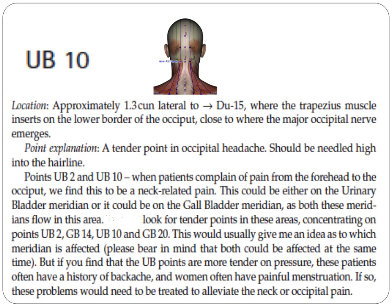Points UV2 and UV10: when patients complain of pain from the forehead to the occiput, we find this to be a neck-related pain. This could be either on the urinary bladder meridian or the gallbladder meridian, as both meridians flow in this area. Look for the tender points in these areas, concentrating on points UV2, GB14, UV10, and GB20. This would usually give an idea as to which meridian is affected. Please bear in mind that both could be affected at the same time.